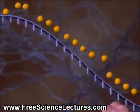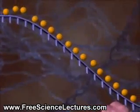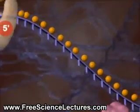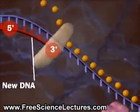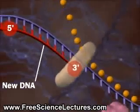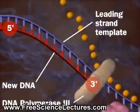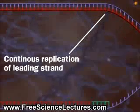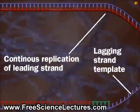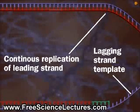One DNA strand encodes the leading strand, which forms from its 5' to its 3' end using DNA polymerase 3. No problem here, but the lagging strand presents problems.